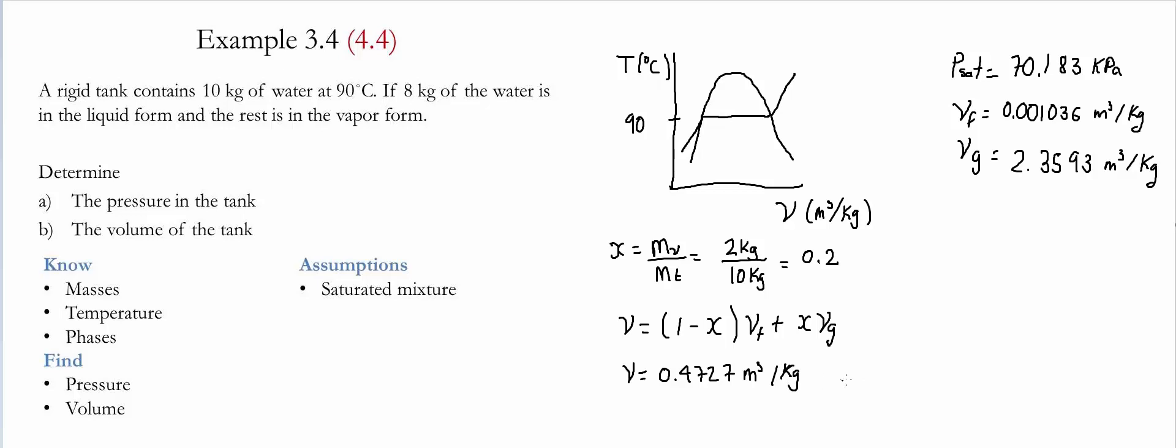Now in order to find the actual volume that we have for this system, we simply are going to take the specific volume that we found and multiply it by the total mass that we have in the system. Therefore the total volume is equal to 4.727 meter cubed.